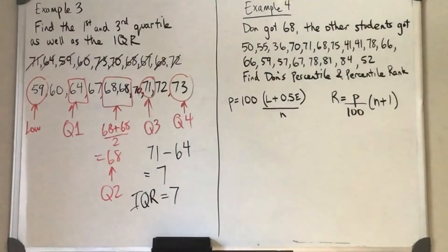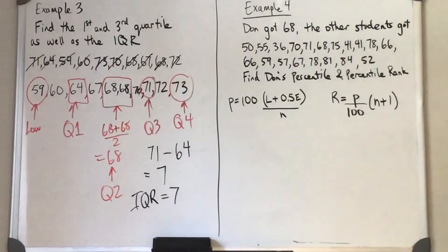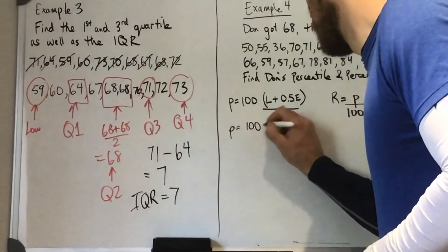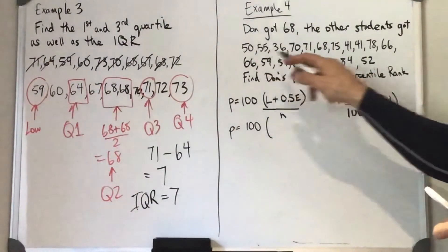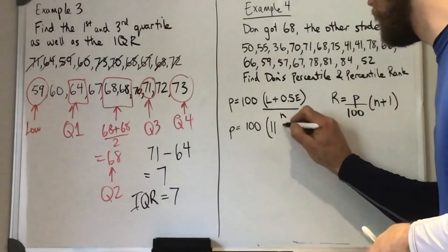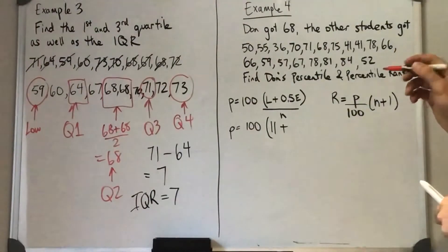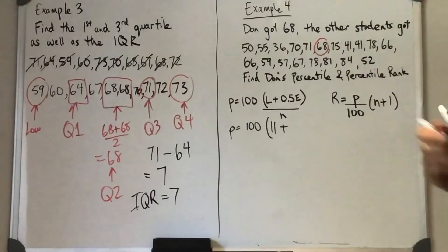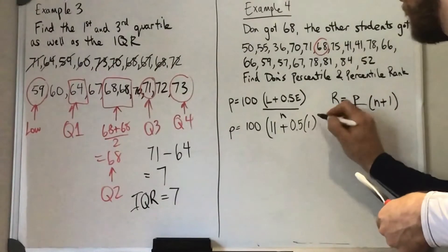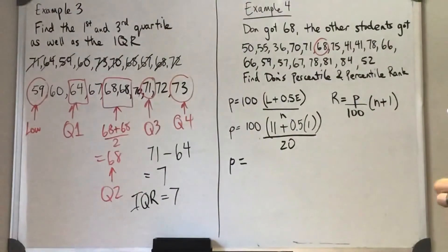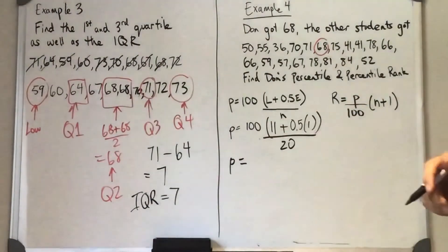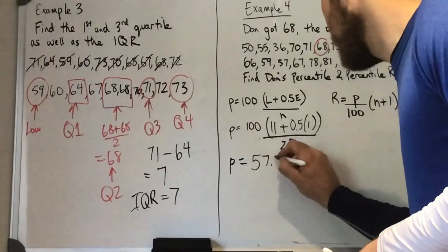In Example 4, we're trying to find the percentile and the percentile rank for this set of data. Don got a 68; here are the marks for everyone else in the class — find his percentile and percentile rank. For his percentile, we need to know how many entries are lower than 68. Going through and counting, that works out to 11. We've got one entry equal to 68, so we have 0.5 times 1. And there are 20 total entries including Don. Calculating this all out, it works out to 57.5.